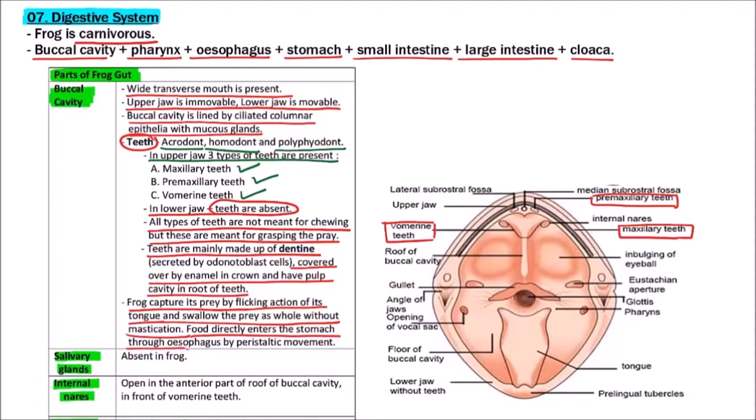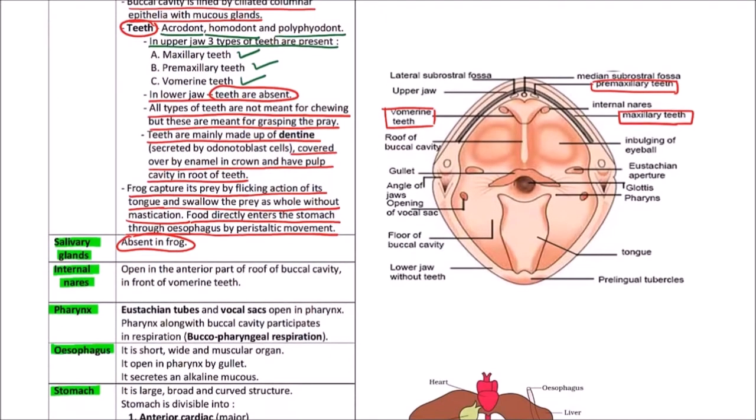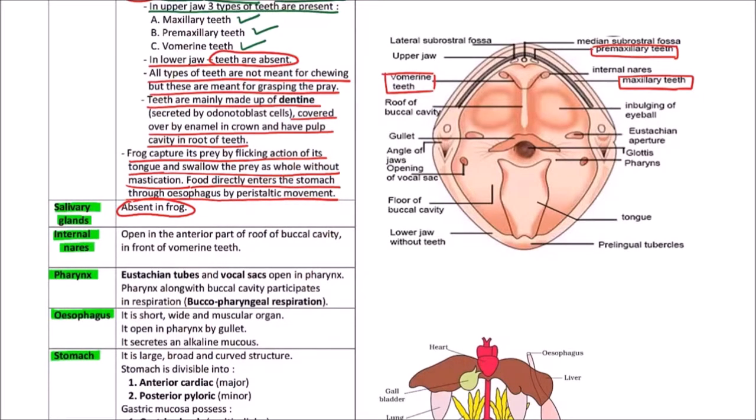Food directly enters the stomach through the esophagus by peristaltic movement. Salivary glands are absent since food is directly swallowed. Internal nares open in the anterior part of roof of buccal cavity in front of the vomerian teeth. Here are the vomerian teeth and these are opening just in front of them.